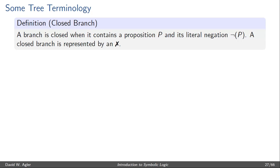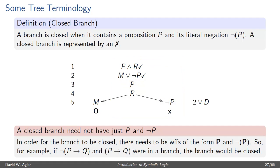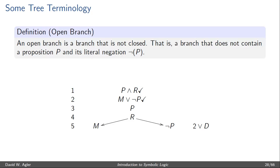A branch is considered closed when it contains a proposition or formula P and its literal negation. P need not be the letter P — it can be any well-formed formula. We illustrate that a branch is closed by placing an X at the base of the branch. In this example, if you take a look at the rightmost branch, this branch is considered closed. The reason is that in the set of well-formed formulas found in this branch, there is a proposition and its literal negation — in particular, a proposition P at line 3 and NOT P, its literal negation, at line 5. What makes a branch closed is that there is a proposition and its literal negation. So for example, if you had NOT P → Q and P → Q, notice that these two formulas are literal negations of each other, and so if they were both found in the same branch, the branch would be considered closed.